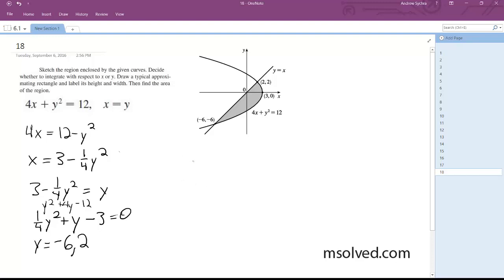Alright, what we do now is we write this out. So we're going to have negative 6 to 2, negative 6 to 2, 3 minus y squared over 4 minus y dy.